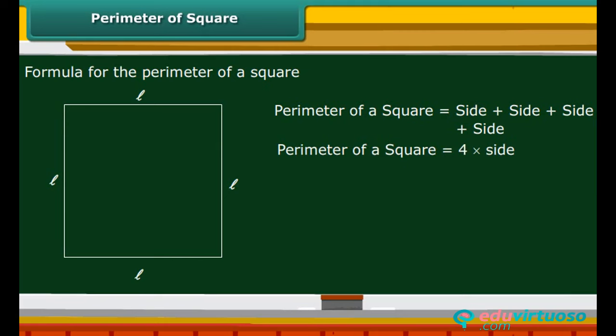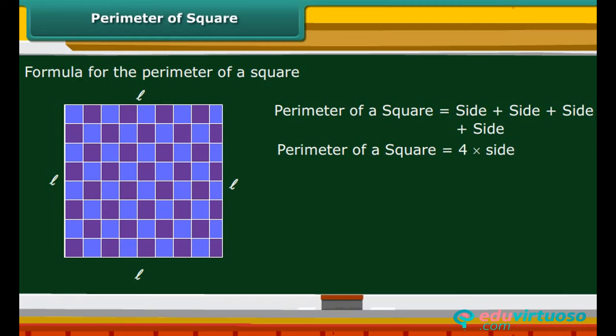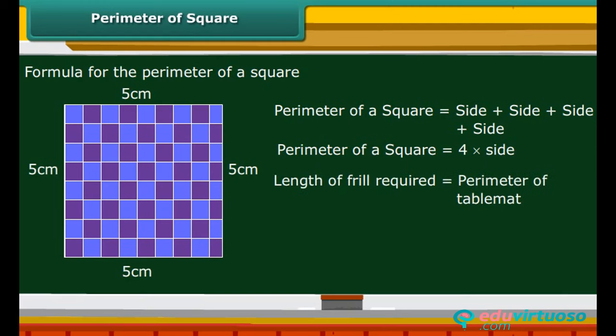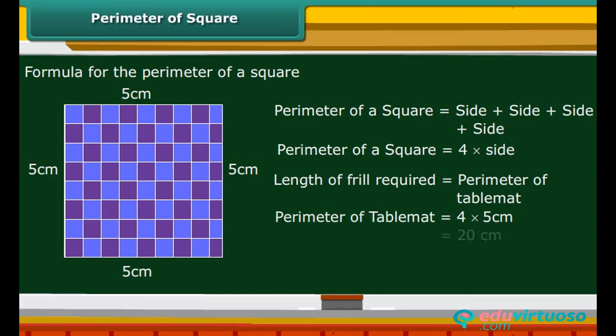You want to add frills to all sides of a square table mat whose side length is 5 centimeters. Calculate the length of the frill required. The length of the frill required is equal to the perimeter of the table mat. The perimeter of the table mat is 20 centimeters. Therefore, 20 centimeters of frill is required.